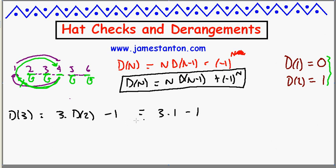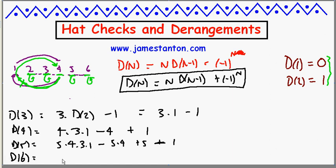D of 4 is going to be 4 times that, 4 times 3 times 1 minus 4 plus minus one to the fourth. D of 5 is going to be 5 times that, 5 times 4 times 3 times 1 minus 5 times 4 plus 5 plus minus one to the fifth minus one.